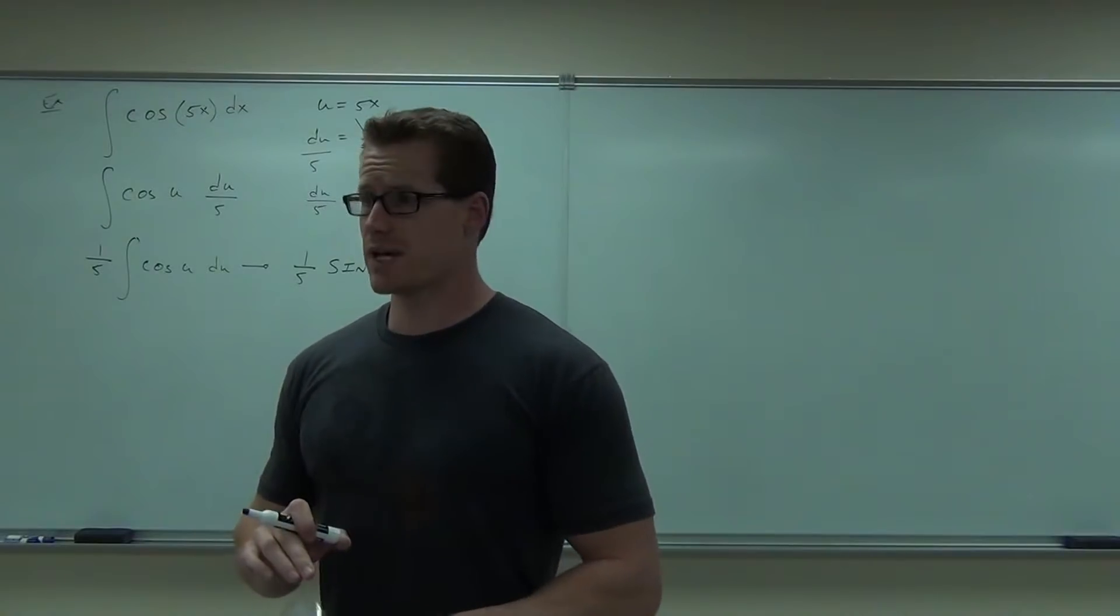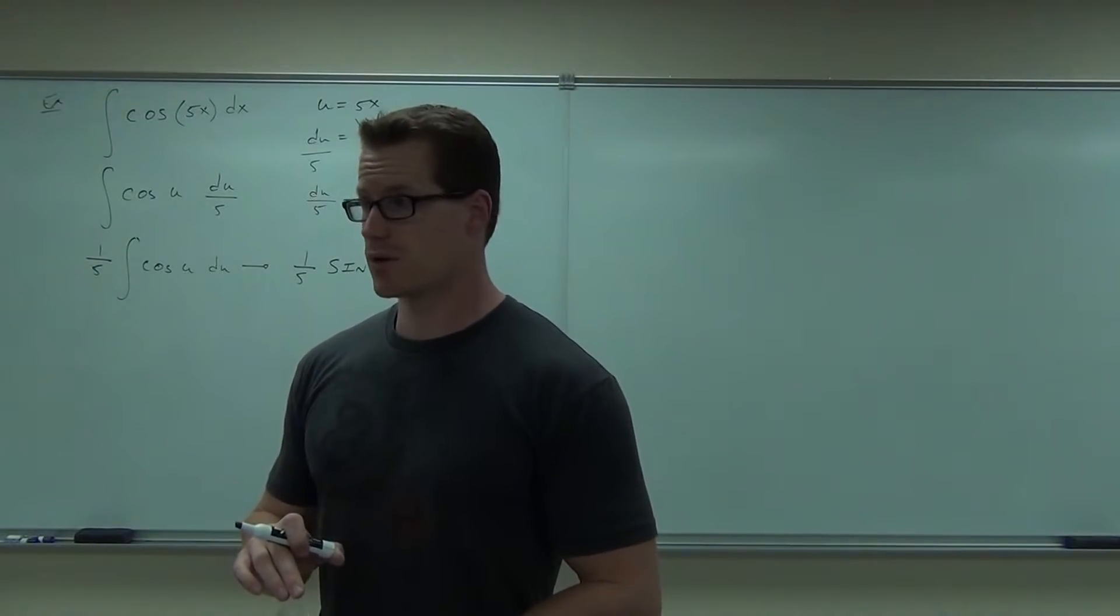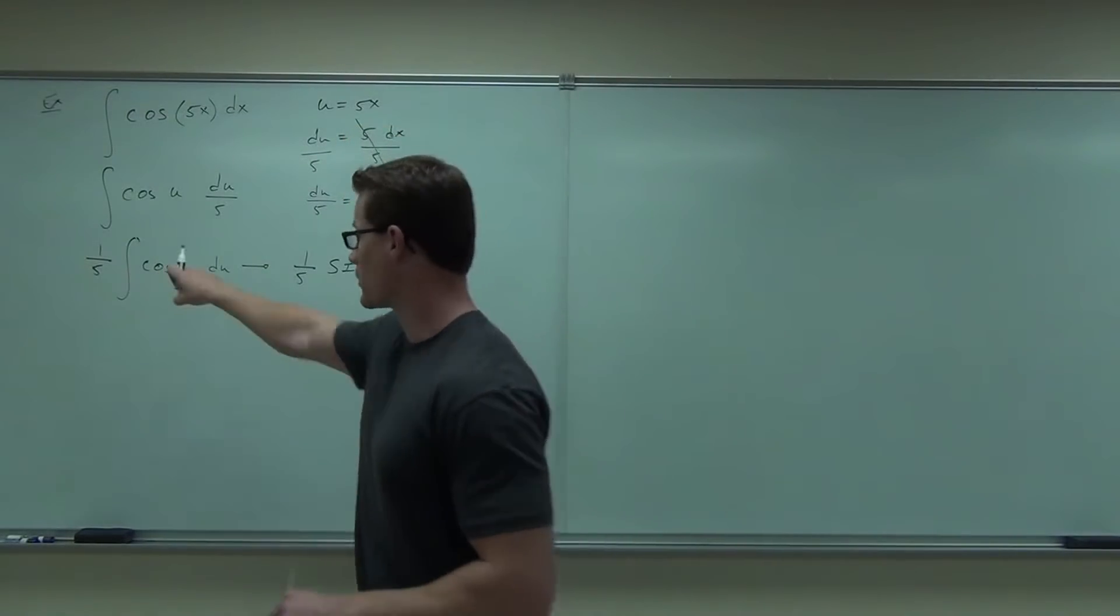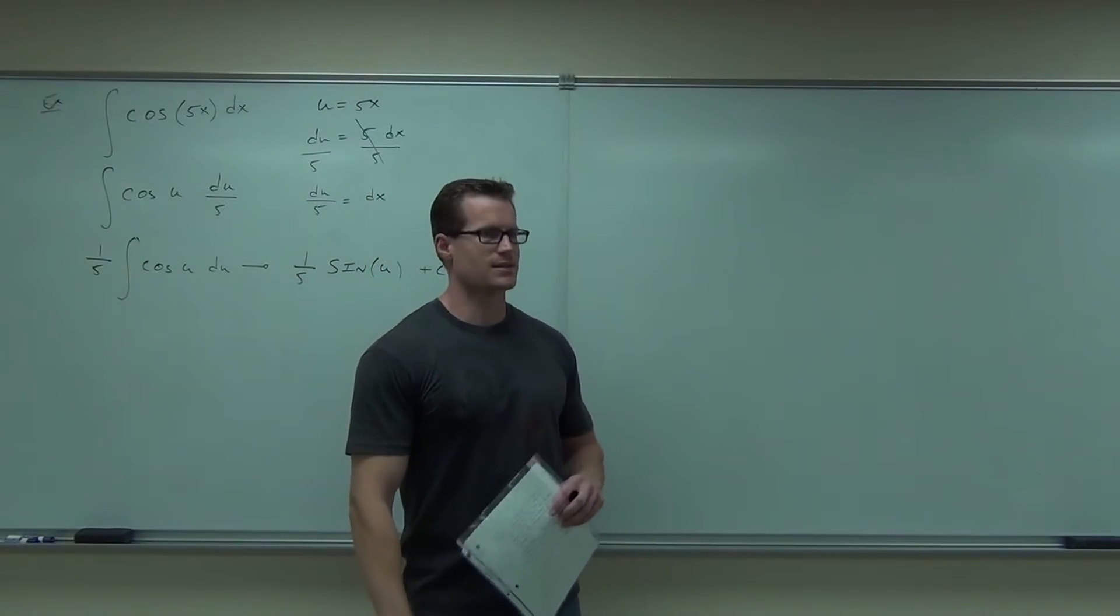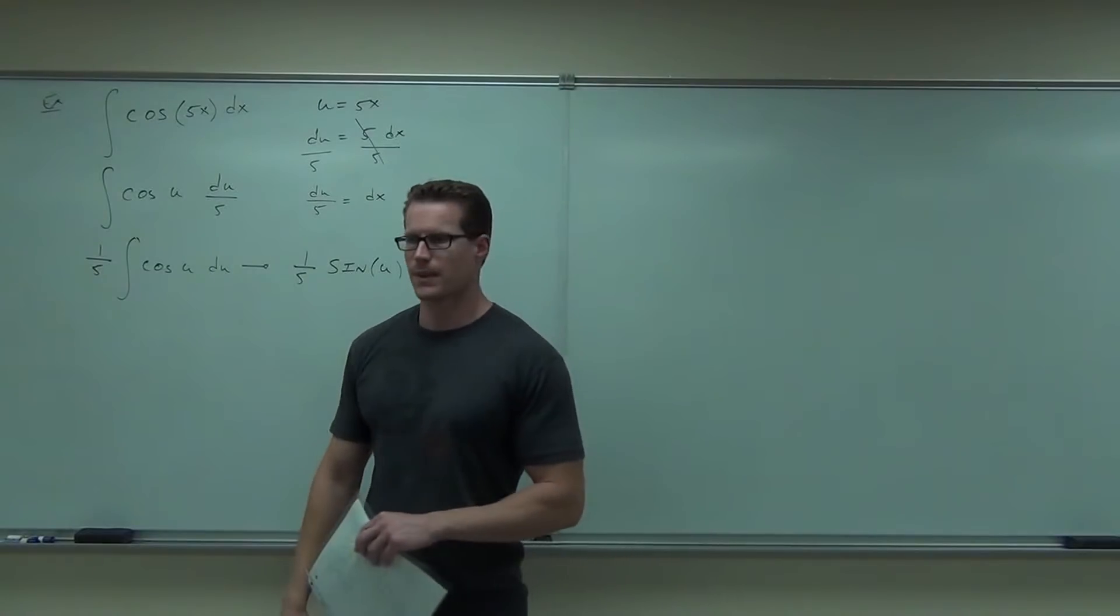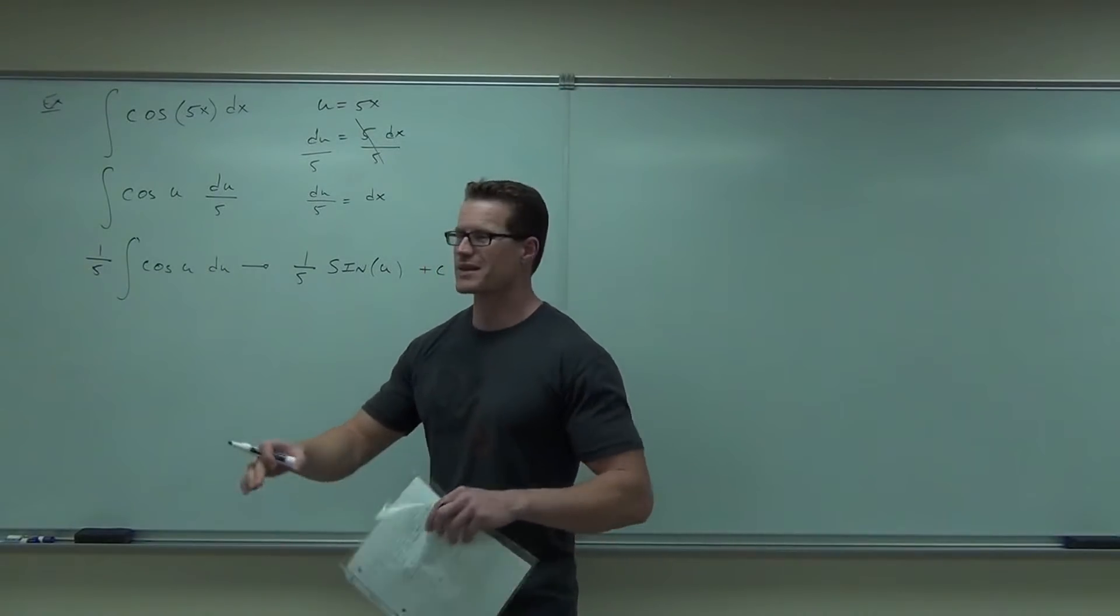If you said negative sine, take the derivative of negative sine. It would give you negative cosine. That is not what we have right there. The derivative of sine gives you cosine. Yes, that's the correct integral. Does that make sense? So be careful, it's all about the signs with your trig.